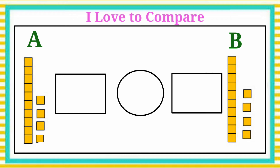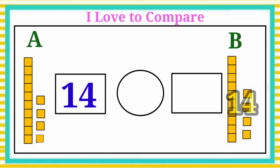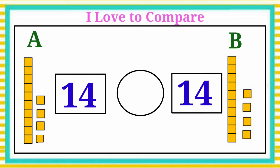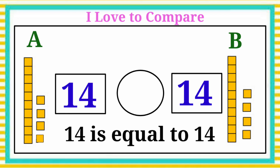See the next example. Here we have two groups of blocks, Group A and Group B. Group A has fourteen blocks. Write the number fourteen in the box. Group B also has fourteen blocks. Write the number fourteen in the box. Let's compare fourteen and fourteen — fourteen is equal to fourteen. Let's draw the equal to symbol.